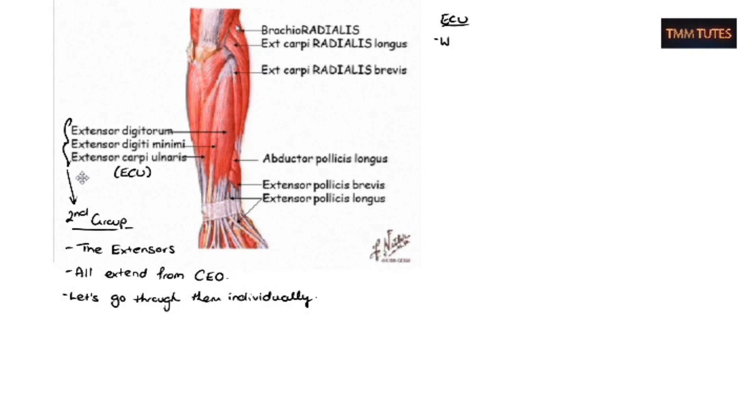So extensor carpi ulnaris. As I said, carpi means it inserts into the actual arm muscles. So it inserts into the ulnar bone and it wraps around and lies edge to edge with flexor carpi ulnaris from the other side. So these two actually form the medial border of your forearm, which is the little finger side. And it can contract with FCU, which is flexor carpi ulnaris on the other side, to create ulnar deviation. So moving your whole hand at the wrist towards your little finger.